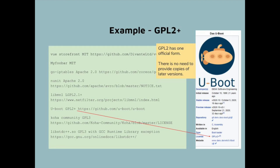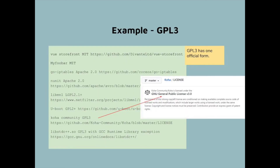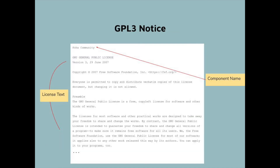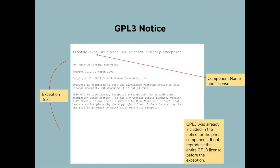Next, we have a component under GPL 2 plus. Similar to before, we put the name of the component, indicate GPL 2 or later, and reproduce only GPL version 2.0. Finally, we have a component under GPL 3.0 — and if it said GPL 3 plus it wouldn't make any difference since this is the latest version of GPL. We put the name of the component and reproduce the entire license. Then, for a component under GPL 3 with an exception: because we've already put a copy of GPL 3 in our notice file, we simply put the name of the component and reproduce the exception.